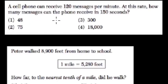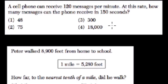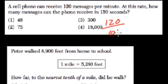A cell phone can receive 120 messages per minute. How many messages can a phone receive in 150 seconds? So it's 120 messages per minute, or 60 seconds, and X messages in 150.